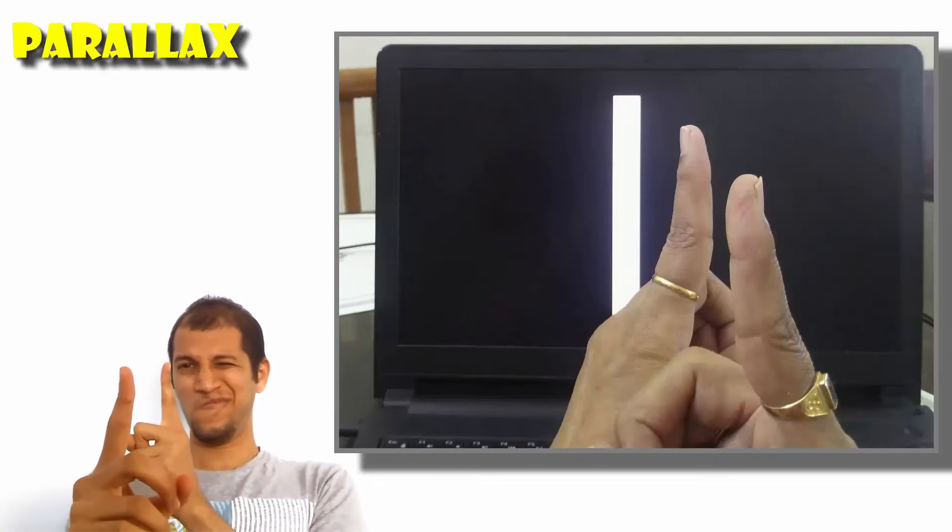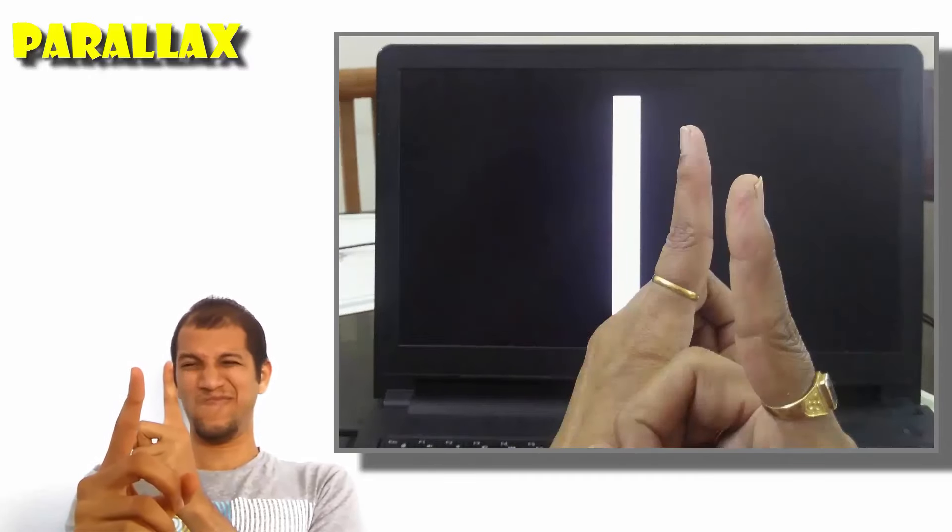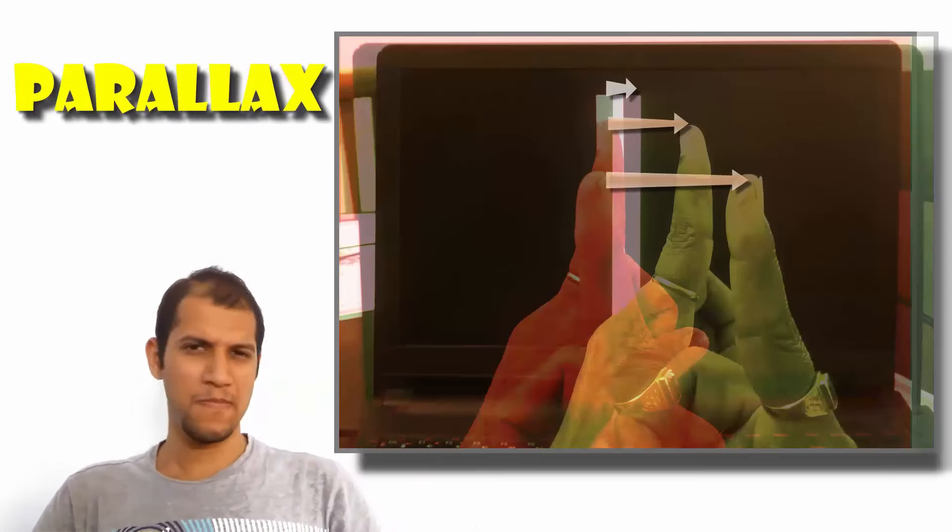You should see something like this. The finger very close to you apparently moves a lot compared to the finger farther away. And the line barely shifts. This shift is called the parallax.